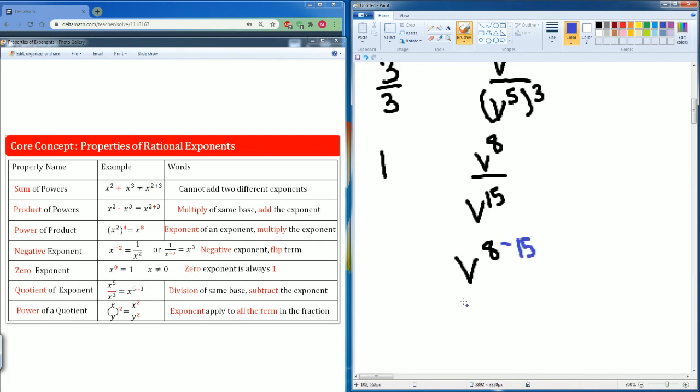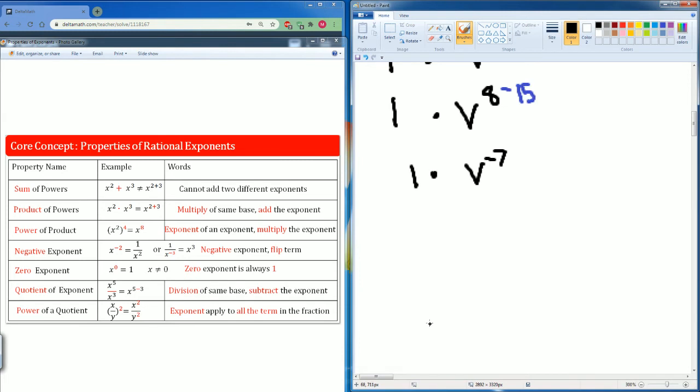You're going to get v to the eighth subtract 15 is v to the negative 7 power. And again the 1 stays here if you would like to see it. No one likes the exponent of negative 7 so you have to flip the term. It's on top so now it's going to come to the bottom. So the final answer is 1 divided by v to the seventh power.